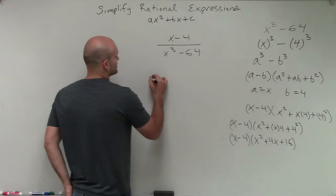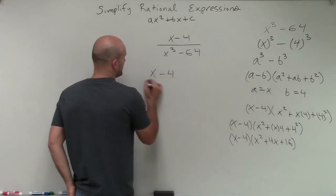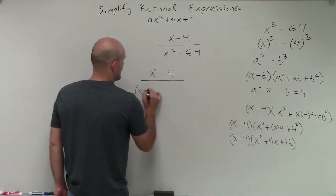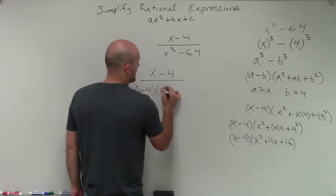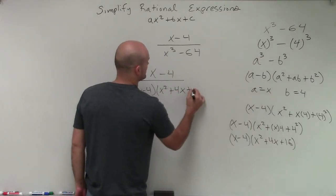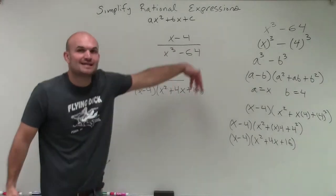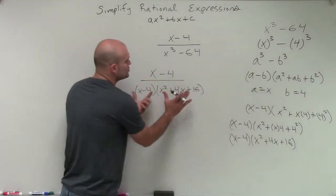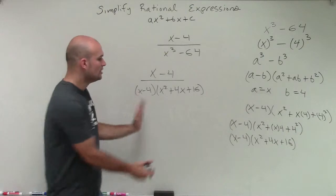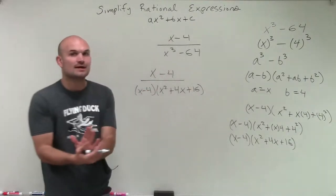So now, if I rewrite my rational expression, I have x minus 4 divided by x minus 4 over x squared plus 4x plus 16. All right? Now, notice we have a binomial times a trinomial. Now, these are two separate terms that are being multiplied. Don't worry about what's inside their parentheses.